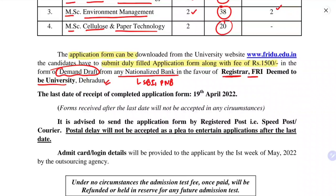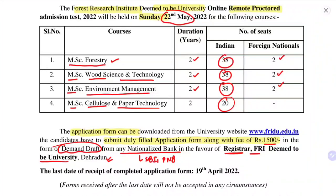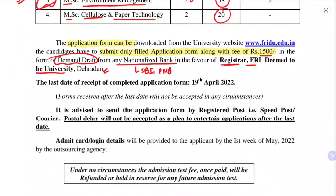The process is completely offline and you have to post it via national post or private courier. Anyone who is serious about this examination can go ahead. The fee of 1500 is per exam. You can apply for any number of courses depending on your eligibility — for example, MSc Forestry and MSc Environmental Sciences. You give just one examination but fill two separate forms, paying rupees 3000 for two forms, 4500 for three forms, and so on.